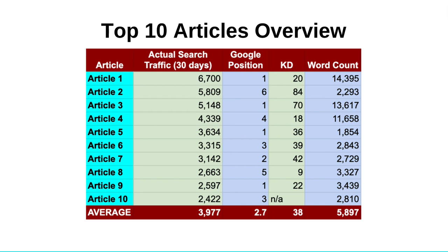Basically what I did here is I took the top 10 performing articles in terms of search traffic and provided some key information. The reason I did this is to try to glean some key takeaways in terms of content strategy. At the end of this video, I have several takeaways from data such as what I'm presenting in the next series of tables. The top 10 articles — you can see the actual search traffic. I filtered for Google search, which is the lion's share of traffic to the site.